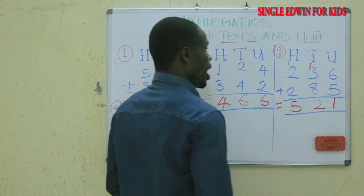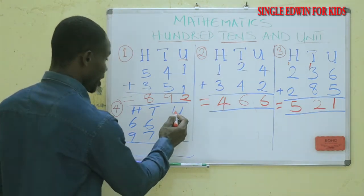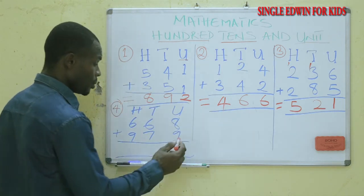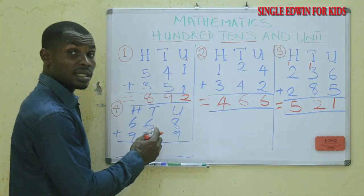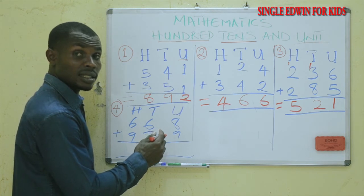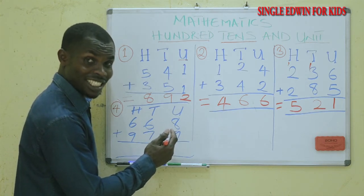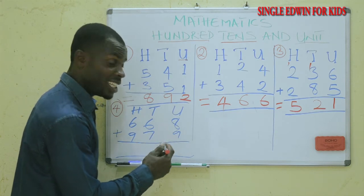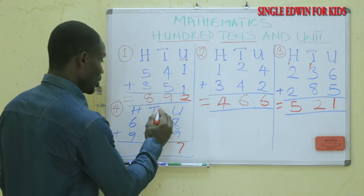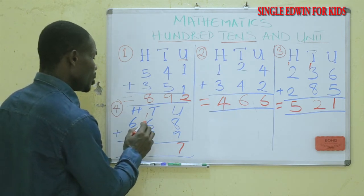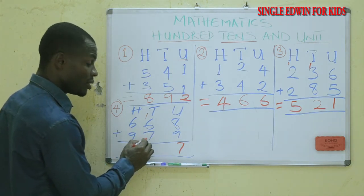Now we are going to go to the last one. We start from the unit. Nine plus eight is seventeen. You write seven and carry one to the tens place. Then six plus one is seven, and seven plus seven is fourteen. You write four and carry one to the hundreds place.